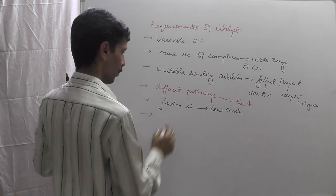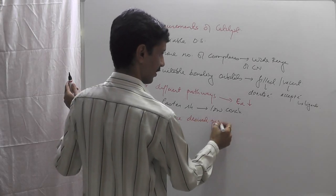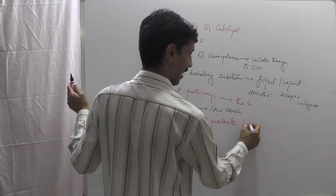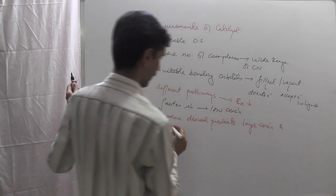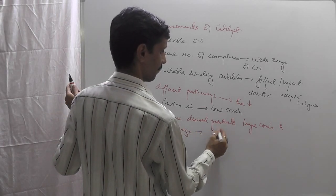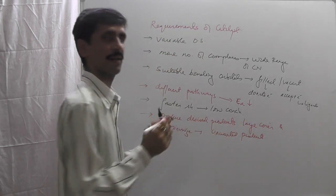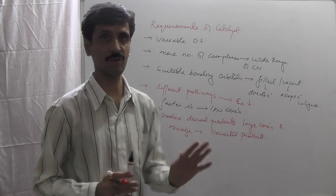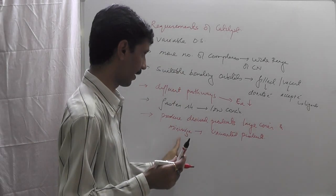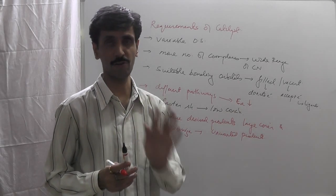The next point: it should have an ability to produce the desired products in large concentration, and minimize the amount of unwanted products. As I was discussing when talking about selectivity, the product for which we execute a chemical reaction is the desired product. It should be obtained in large amount, and the catalyst should minimize — ideally to zero theoretically, but practically just minimize — the concentration of the unwanted products.